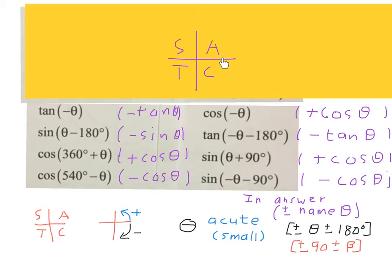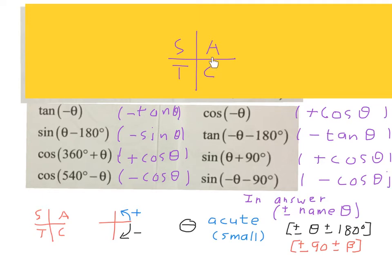For negative theta — start at north, go acute angle backwards — fourth quadrant. Tan is negative there, so we put a minus. For sin(180 minus theta): start at north, go to 180 minus theta — second quadrant — sine is negative there, so we put a negative. For cos(360 plus theta): start at north, do a full 360 plus theta — first quadrant — all is positive, so cosine is positive. For the 540 minus theta case: subtract 360 first to get 180 minus theta — second quadrant — sine is positive but cosine is negative, so we put a minus.